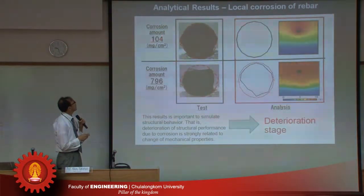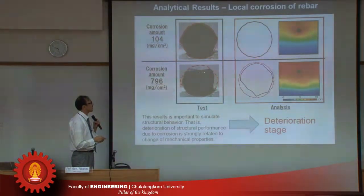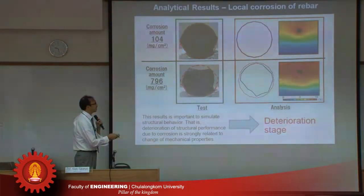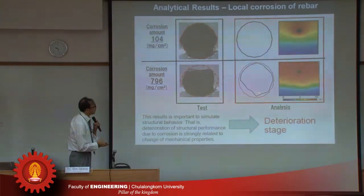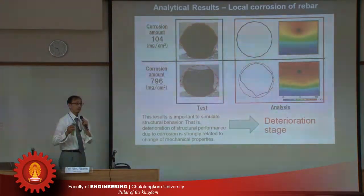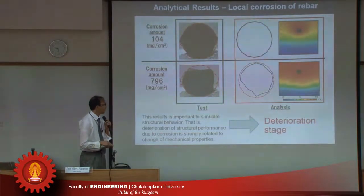This is a local corrosion model of the rebar. The merit of this method is that when we consider Faraday's law, we can calculate the reduction of the corrosion area and the reduction of the cross-sectional area of the rebar. Some locations are different, but similar results can be observed. Using this method, we can simulate the reduction of the rebar cross-section, which is very important for the deterioration stage.